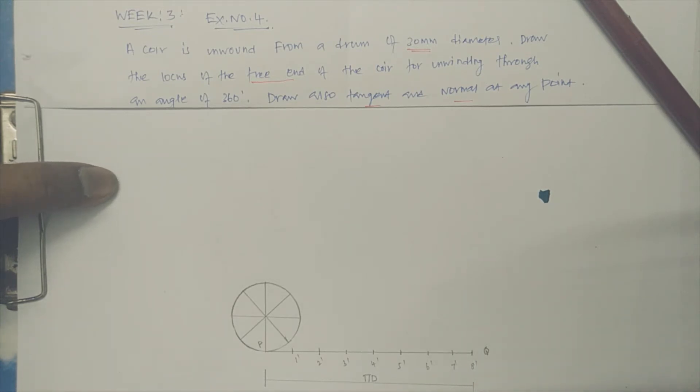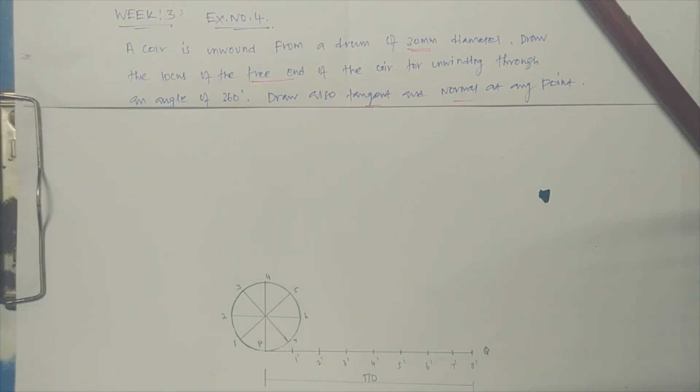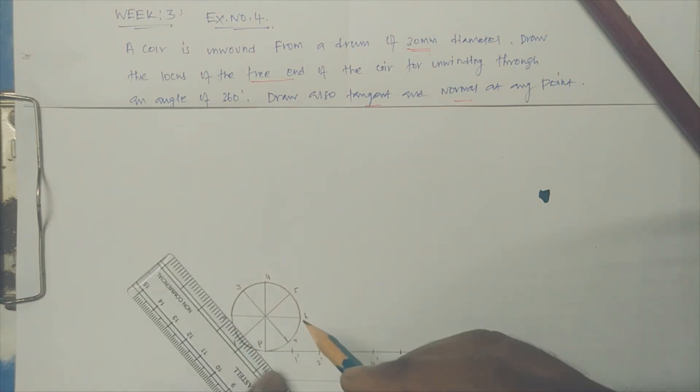Hence in the circle I just start from here: 1, 2, 3, 4, 5, 6, 7. Obviously P is 8. Now here from this point we are just going to unbind the wire and it will reach at 8. For that, for each and every point we are supposed to draw the normal line.